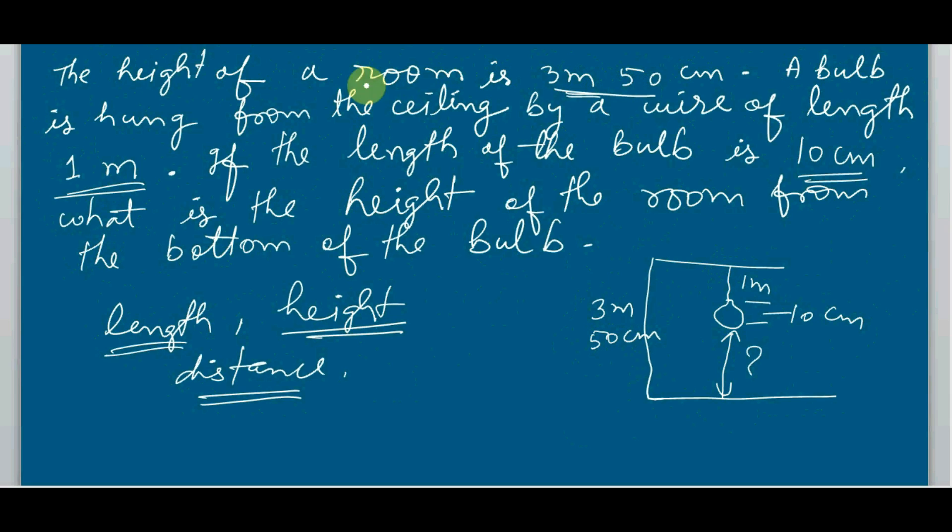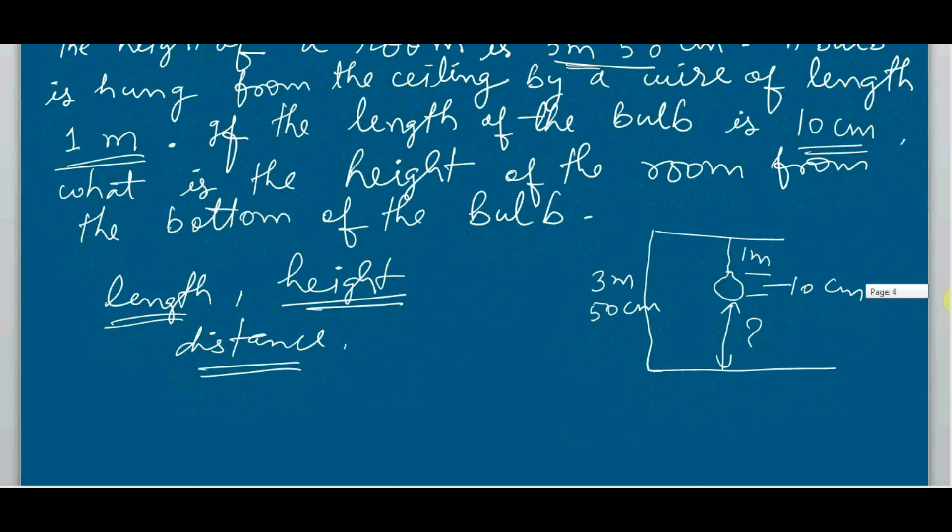First of all I read once again the sum: the height of the room is 3 meters 50 centimeters. So the statement for the first time will be like this: height of the room equal to 3 meters 50 centimeters.